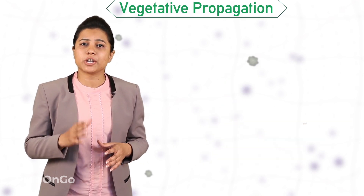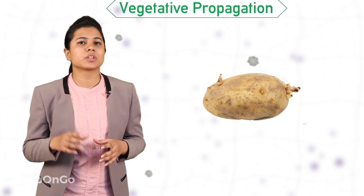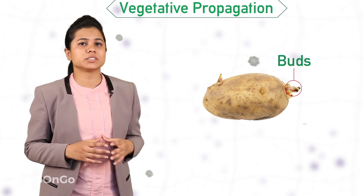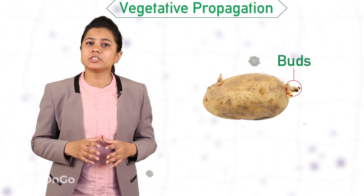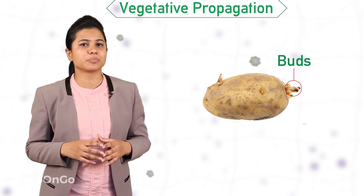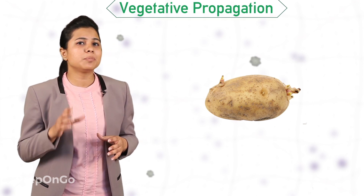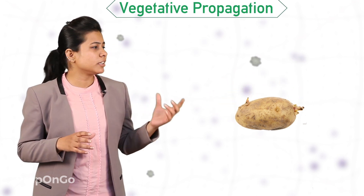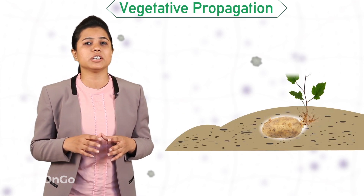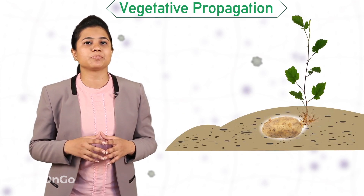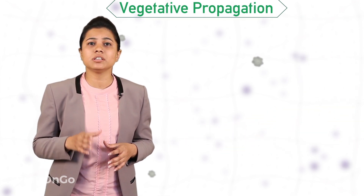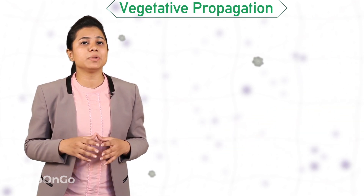Potatoes also show vegetative propagation. Their surface has buds or notches, which are responsible for vegetative propagation. When a potato is planted into soil, these buds and notches grow into a new plant.